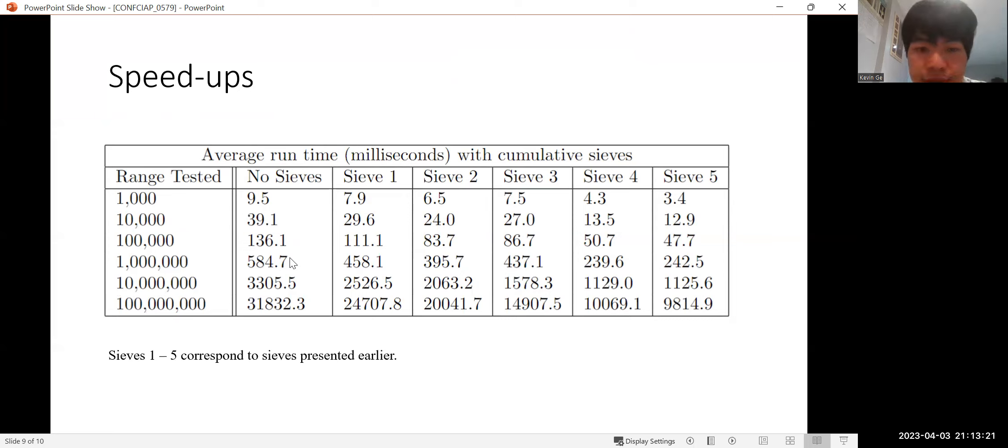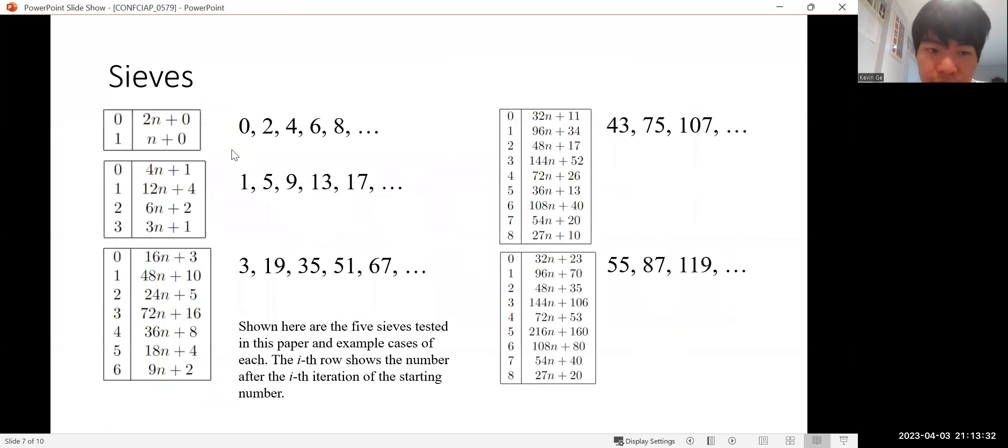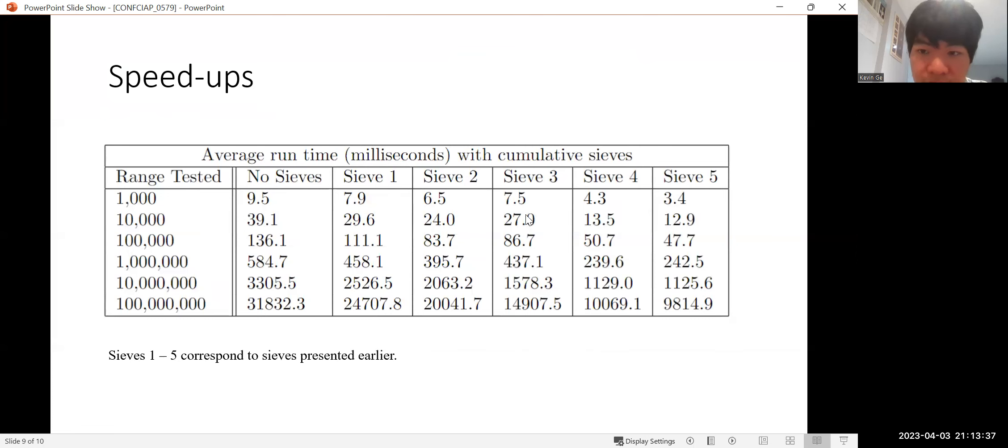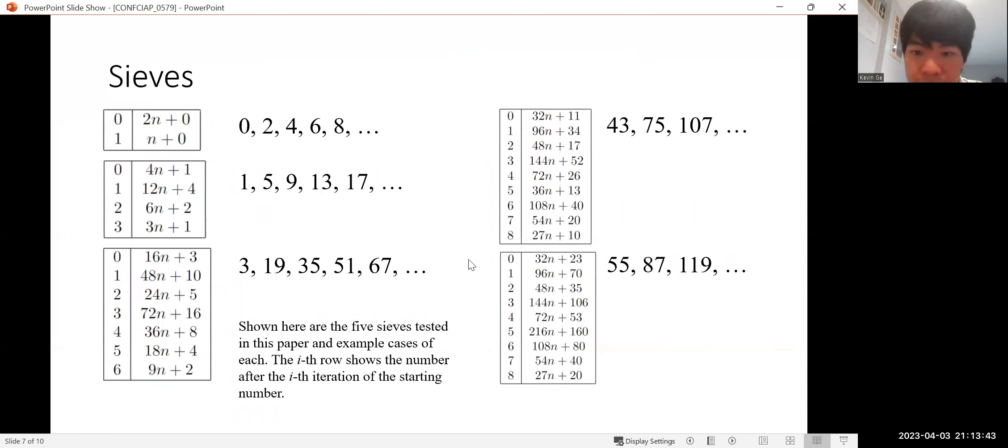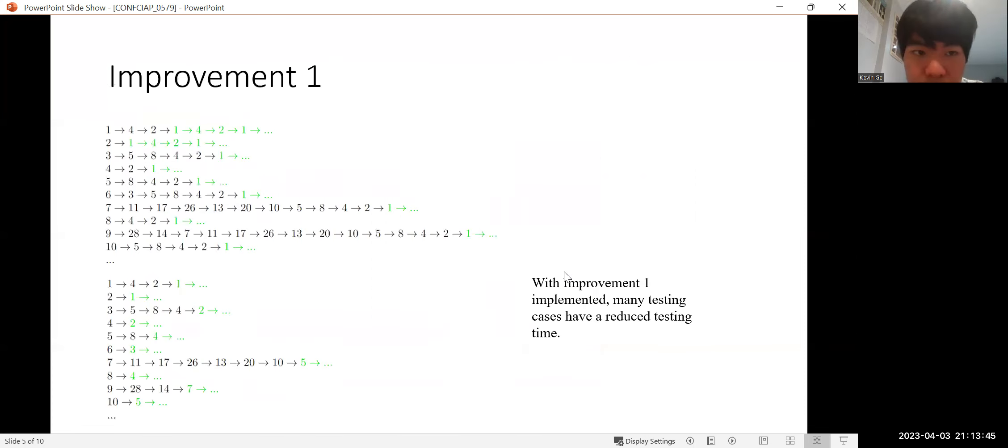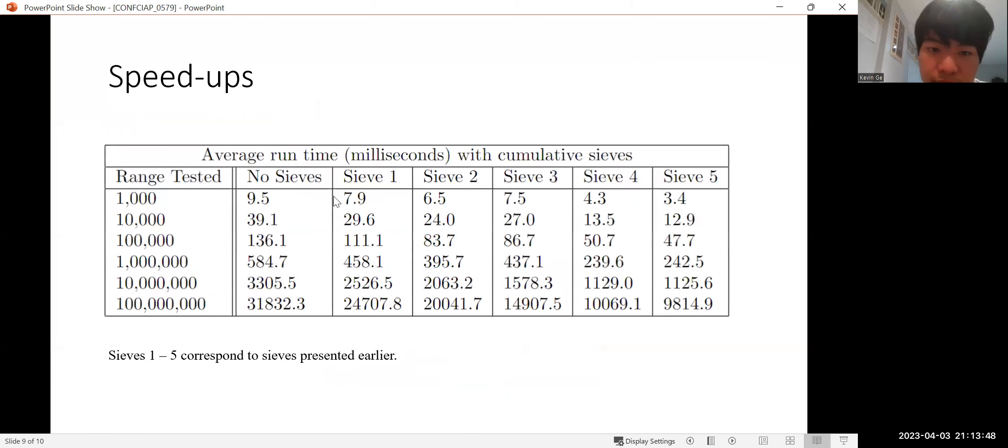The first column shows the testing time without the sieve, in milliseconds. The second column shows the testing time when sieve is implemented. Sieve1 to sieve5 just refer to the order. Sieve1 and sieve5, all the sieves from sieve1 to sieve5 refer to the sieves shown here in the order. So, for example, it takes 9.5 milliseconds to test all the numbers from 3 to 1,000 with no sieve implemented.